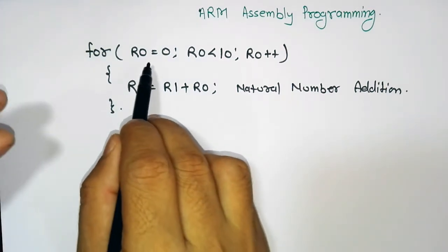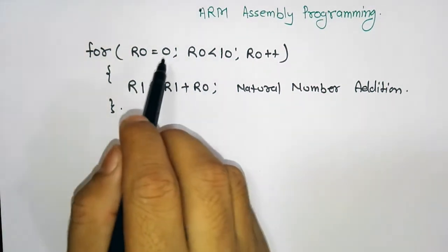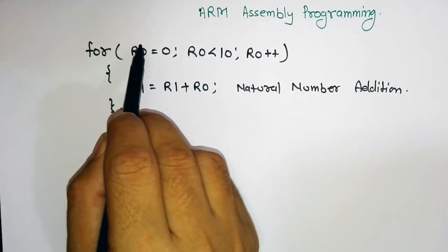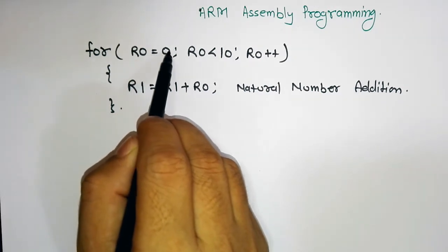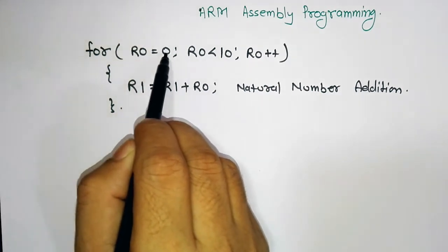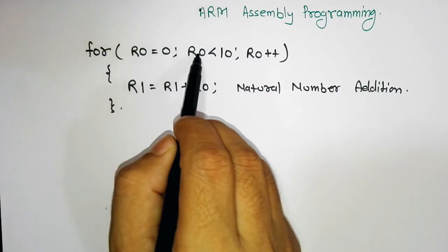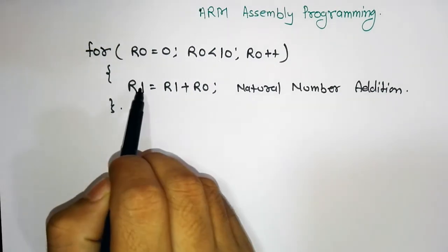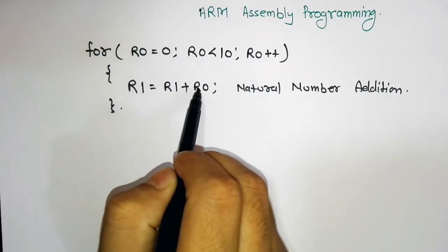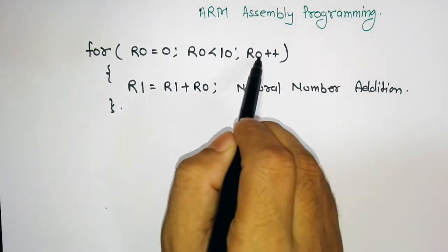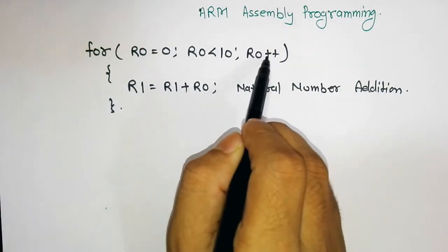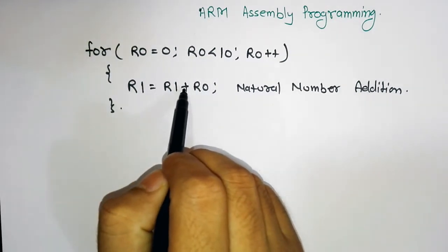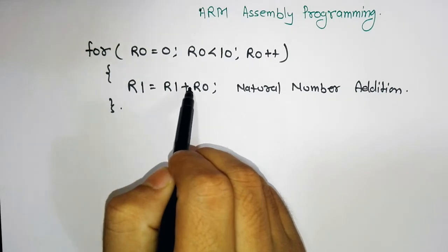Now we need to convert this for loop into ARM assembly. First, understand how the for loop works. The for loop first initializes R0 equal to 0. Then it checks whether R0 is less than 10, and if it is true then it adds R1 with R1 plus R0, then increments R0 one more time, and again checks whether R0 is less than 10.